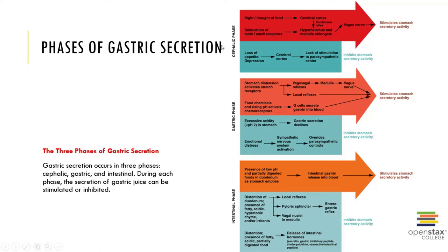That information is picked up by receptors — specifically taste and smell receptors — and brought to the central nervous system via afferent fibers and the hypothalamus. The hypothalamus receives that information and induces the responses needed for preparing the GI tract for food processing. Some signals are relayed to the medulla, which activates the vagus nerve to stimulate the parasympathetic nervous system response, which in turn stimulates gastric secretion.